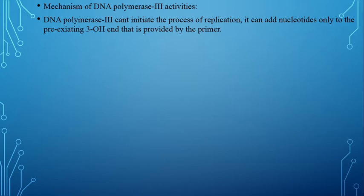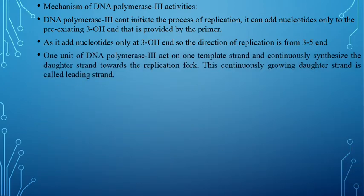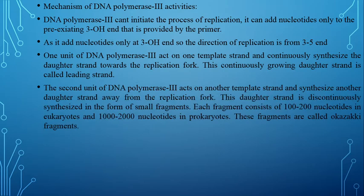DNA Polymerase 3 jab isko primer mil jaaye, toh primer ka jo 3 prime end hai, wahaan se nucleotide add karke naya woh strand bana raha hota hai. Chunke yeh 3 prime end ki upar nucleotide ko add karke naya strand banata hai, DNA Polymerase 3 jo naya strand banayega woh 5 se 3 prime end ki taraf banayega. Jo DNA Polymerase 3 continuously daughter strand bana raha hota hai aur jo replication fork ki taraf elongate ho raha hai, isko leading strand kehte hain.